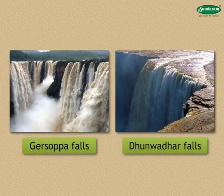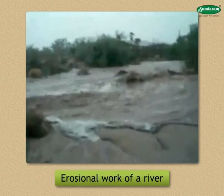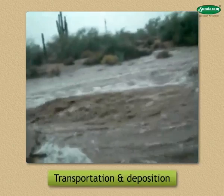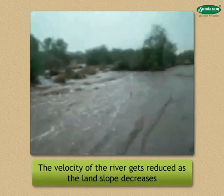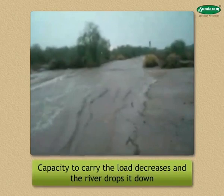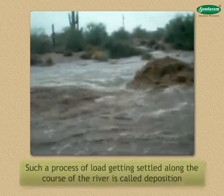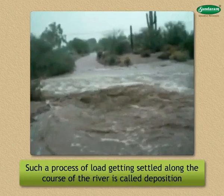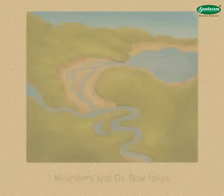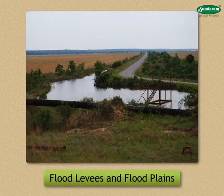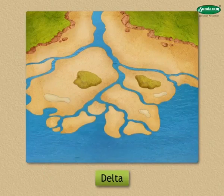Now that we are through with the erosional work of a river, let us talk about the processes of transportation and deposition carried by a river. The eroded material gets transported with the flow of water. The velocity of the river gets reduced as the land slope decreases. Under such conditions, its capacity to carry the load decreases and the river drops it down. Such a process is called deposition. The landforms formed are: 1. Meanders and Oxbow Lakes, 2. Flood levees and flood plains, 3. Delta.